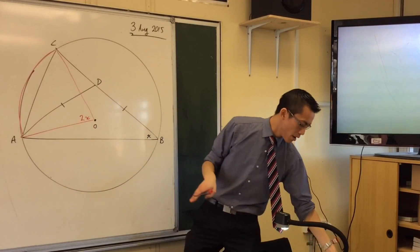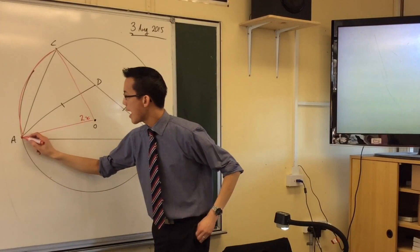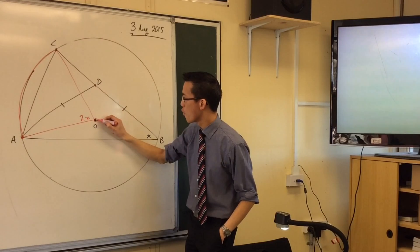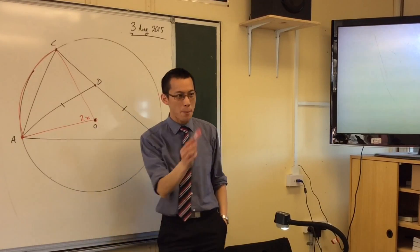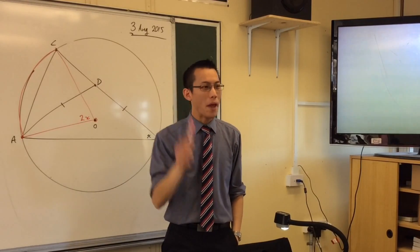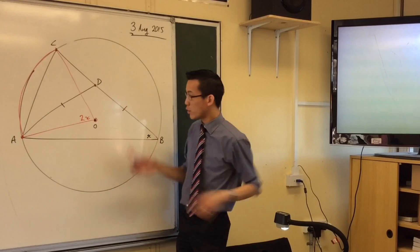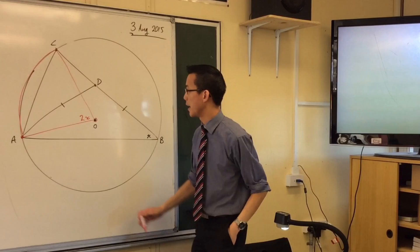You look at the next part, prove that ACDO is a cyclic quadrilateral. Now, remember I told you, when they make you put a construction on, it's a big deal. They could have just drawn it on the diagram, but they made you draw it.